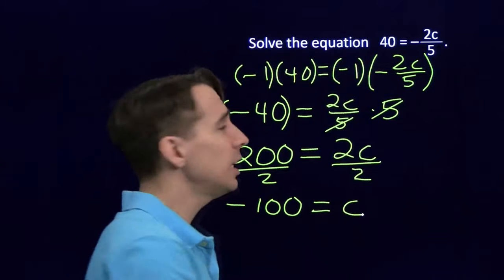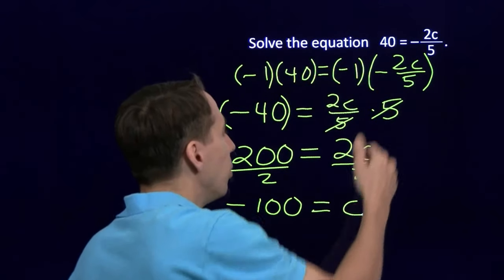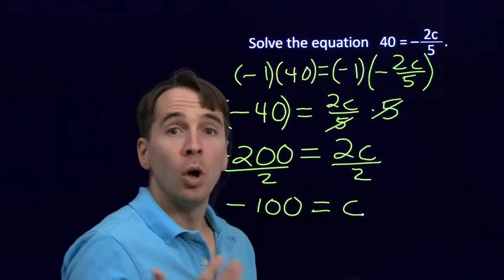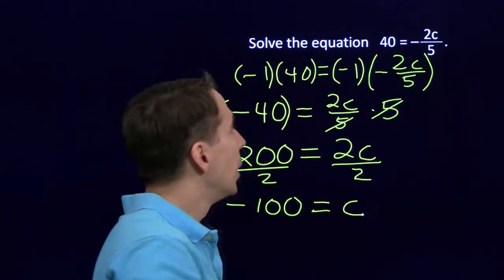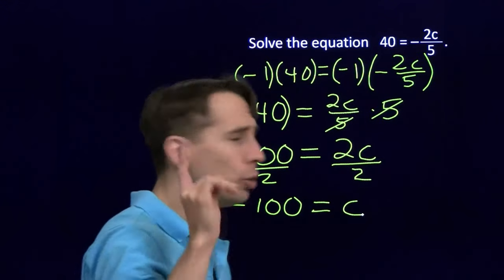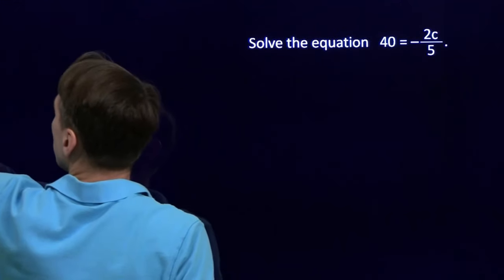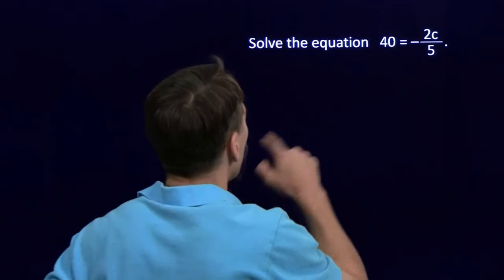Oh, we can combine everything we did here. We multiplied by negative 1. We multiplied by 5. We divided by 2. We can do that all in one step by multiplying by negative 5 over 2. That's very clever. Let's check that out. So we start with this equation.